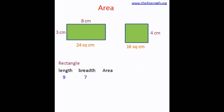Let's look at more examples starting with a rectangle. If length is 9 and breadth is 7, the area is 63. If length is 10 and area is 30, what is the breadth? 30 ÷ 10 = 3, so the breadth is 3. If the breadth is 4 and the area is 48, what is the length? Since 12 × 4 = 48, the length is 12.